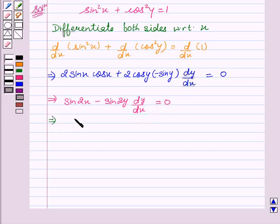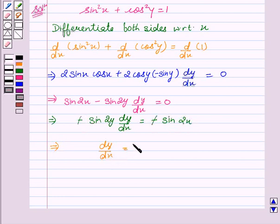This implies minus sin 2y dy by dx equal to minus sin 2x. The minus signs get cancelled out. This implies dy by dx equal to sin 2x upon sin 2y.